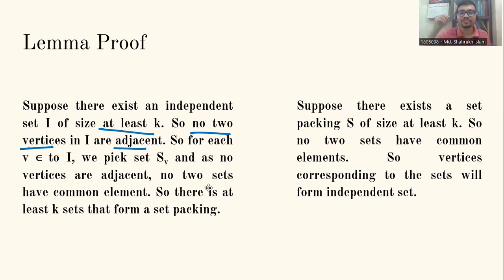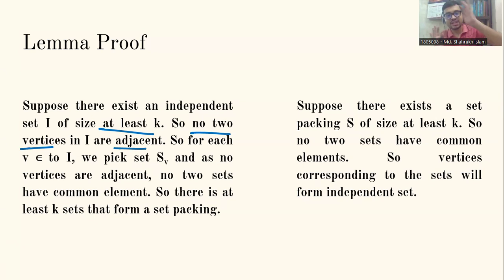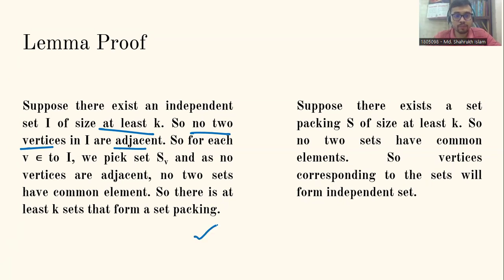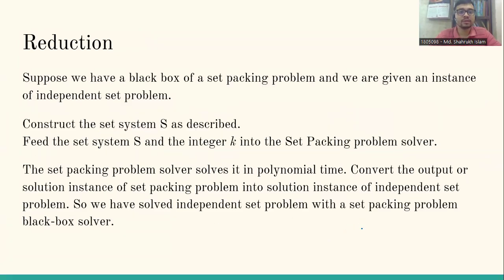Now for the other direction: suppose there exists a set packing of size at least k. Those k sets have no common elements with each other. The vertices corresponding to those sets are therefore not adjacent to each other — they don't share any common edge — and so they form an independent set of size at least k.